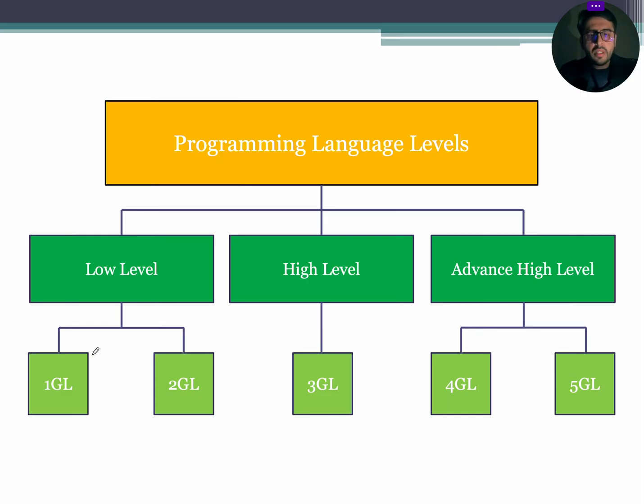Let's start with low level languages that are first and second generation languages. Machine language is the first generation language. It is machine oriented language and the knowledge of computer internal architecture is essential. It is written in binary and executed without any language translators.